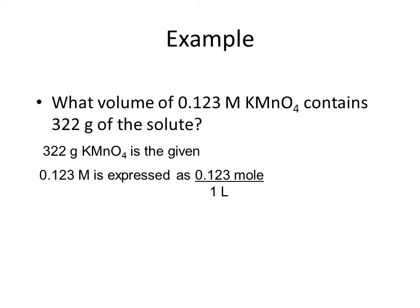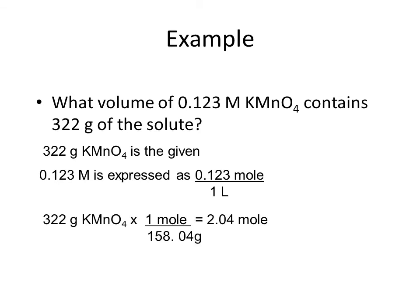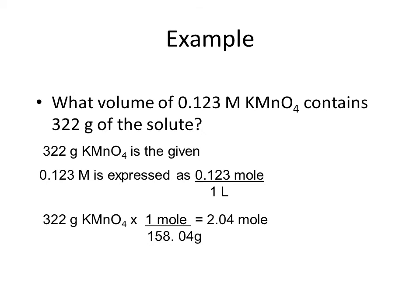How can we go from grams to volume? We go from grams to moles, and then moles to liters. Going from grams to moles is a standard conversion using molar mass. We start with 322 grams of potassium permanganate and use the molar mass of 158 grams per mole to convert to moles. Then we use the concentration as a conversion factor to go from moles to liters, giving us 16.6 liters.